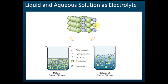An electrolyte can conduct electricity in liquid or molten form, or in aqueous solution, but it cannot conduct electricity in solid state. Let's look at this illustration of sodium chloride. In sodium chloride, there are sodium ions, which are positive ions, and chloride ions, which are negative ions.